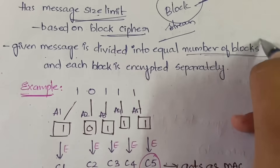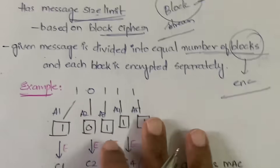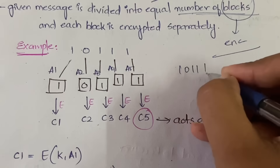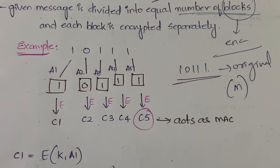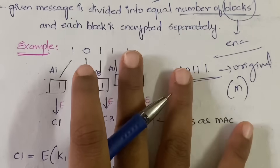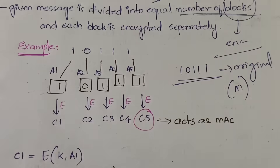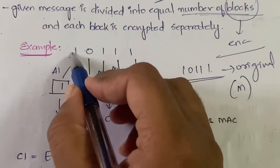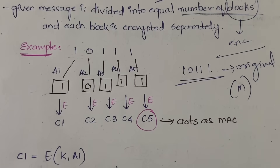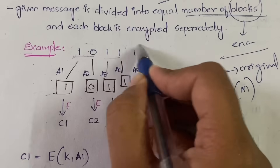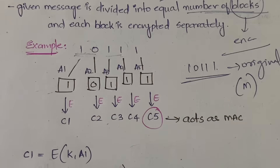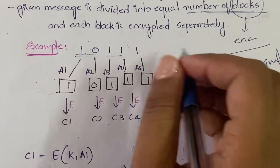In CMAC, you divide the given message into equal-size blocks, and each block is encrypted separately. For example, the original message M is '1 0 1 1 1'. You divide it into equal blocks - each block must be the same size. With five bits you can divide it into one-bit blocks, giving you five blocks, each containing one bit of the original message.